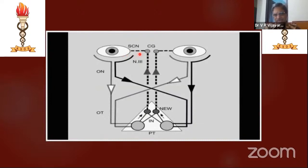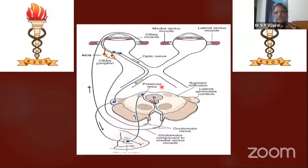The myelin sheath is responsible for rapid conduction — that is why when you put a light, the pupil constricts immediately with no time lag. The pupillary pathways are the only postganglionic parasympathetics in the whole body which are myelinated. Never forget this.